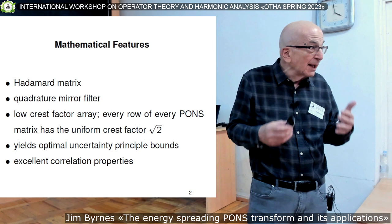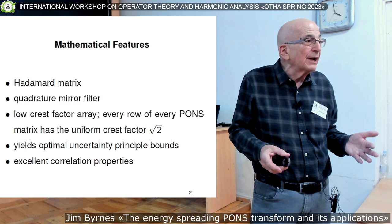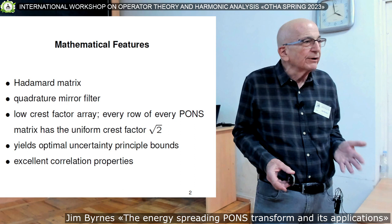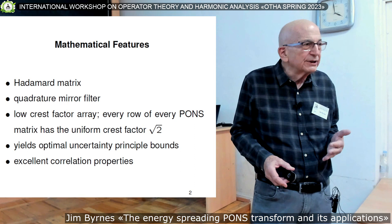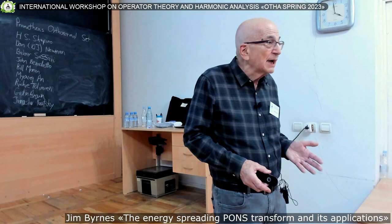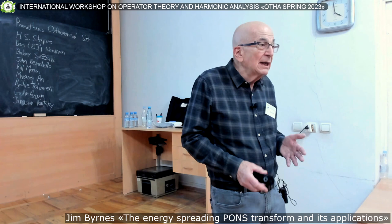As with any transform, there's an underlying matrix. The one you're all most familiar with is the discrete Fourier transform matrix, and the algorithm is the FFT — the fast Fourier transform — for doing digital signal processing. The Walsh matrix, the standard Walsh-Hadamard matrix, is also used in digital signal processing quite a bit.